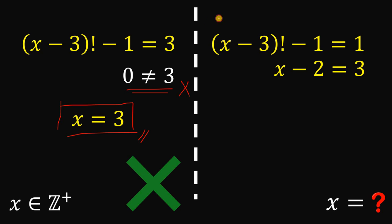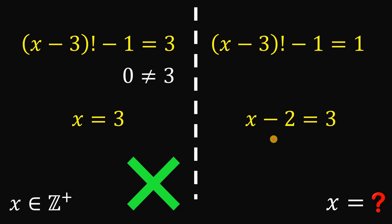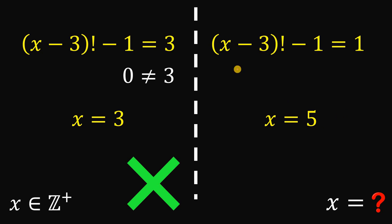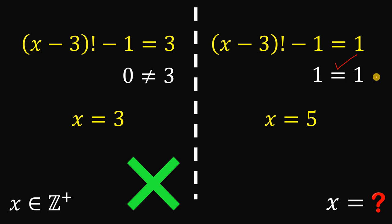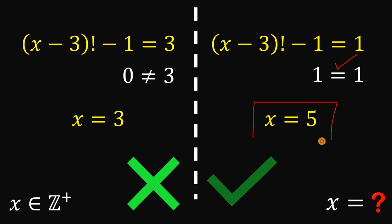For Case 2, x minus 2 equals 3 gives x equals 5. Let's check: x minus 3 factorial minus 1 becomes 5 minus 3 factorial minus 1, which is 2 factorial minus 1, which equals 2 minus 1 equals 1. And 1 equals 1, so they are equal — this equation is satisfied. Therefore, x equals 5 is the valid solution.